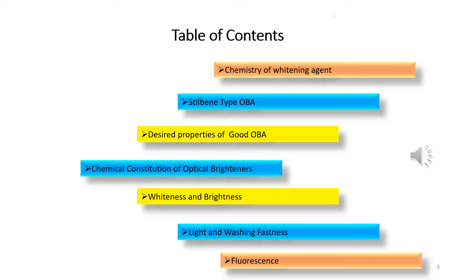In this lecture you will learn about the chemistry of whitening agents, what are stilbene-type optical brightening agents, the desired properties of good optical brightening agents, the chemical constitution of optical brighteners, whiteness and brightness of whitening agents, the effect of optical brightening agents on light and washing fastness, and the role of fluorescence in optical brightening agents.